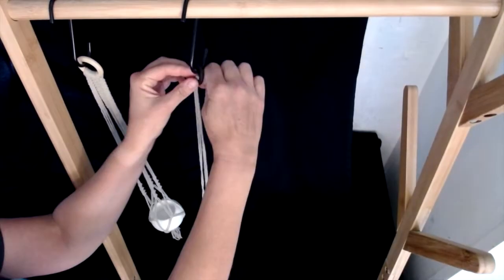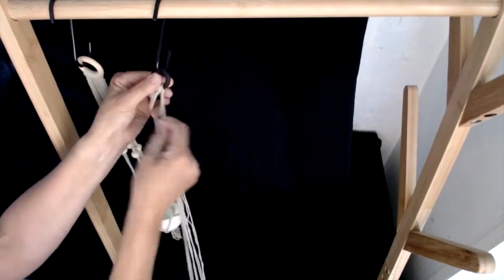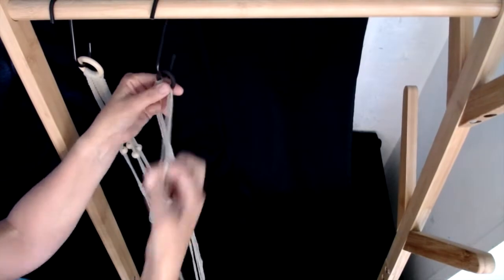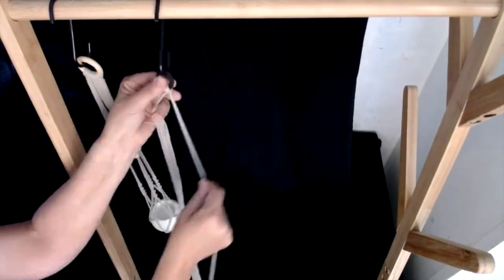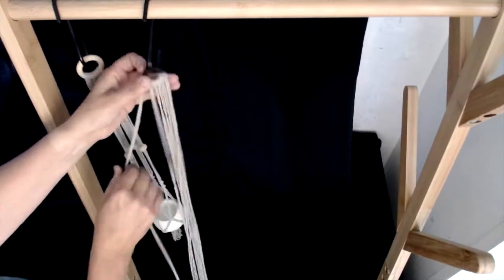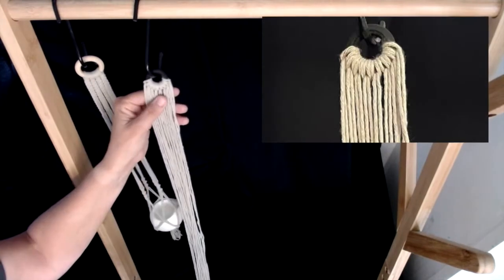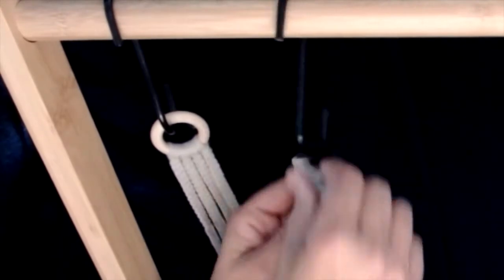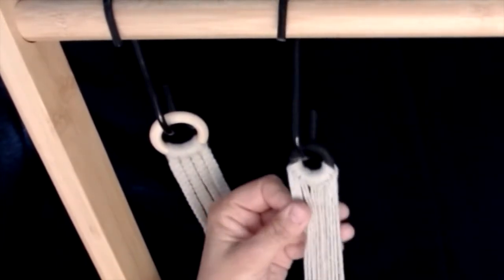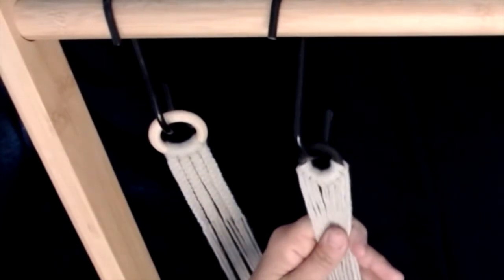Repeat this step for the remainder cords. This is what it'll look like on one side and on the other side it'll look like this. Just make sure that all the loops are the same on each side.